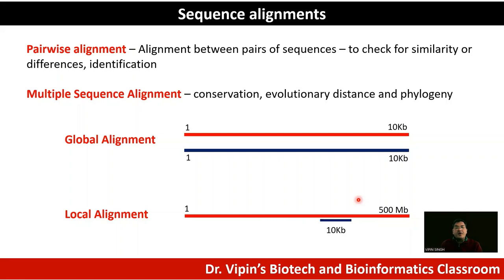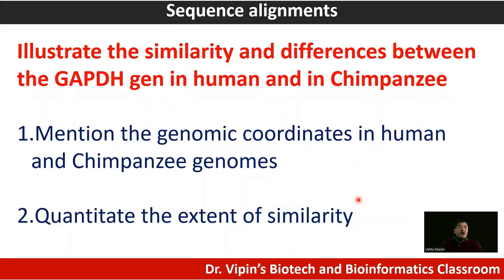Here is our task: illustrate the similarity and differences between the GAPDH gene in human and in chimpanzee, mentioning genomic coordinates in both genomes and quantifying the extent of similarity. We'll first retrieve the GAPDH sequence in the human genome using the genome browser, then zoom into the orthologous locus in chimpanzee using BLAST, and look at the alignment to see how similar or dissimilar the two sequences are.